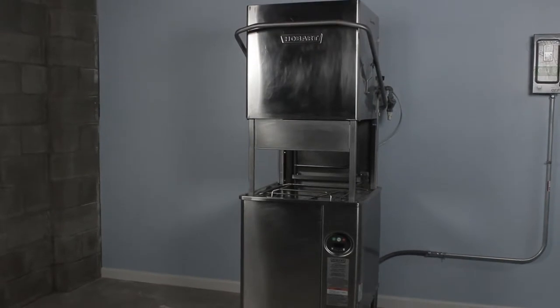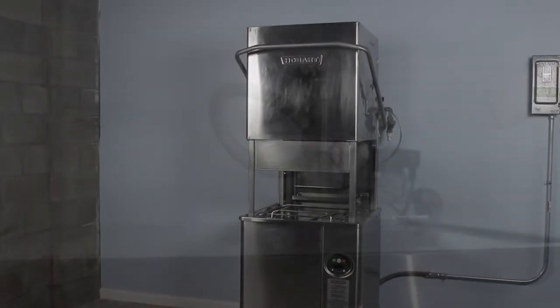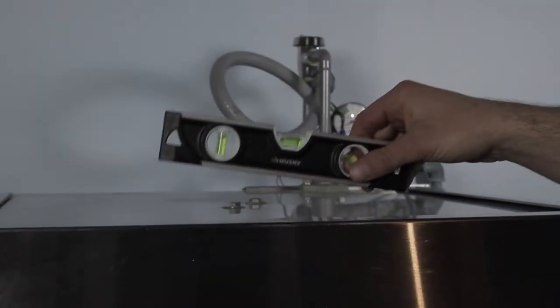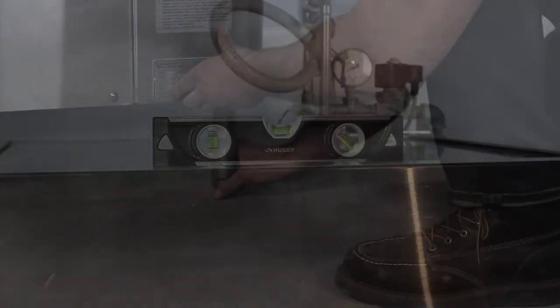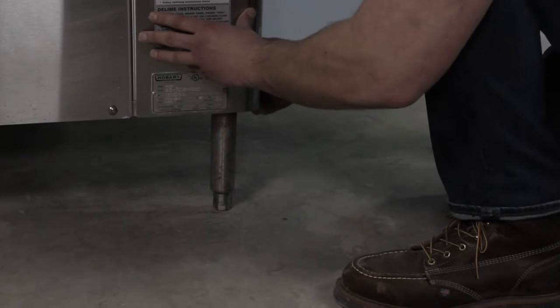To start out, you want to place the machine in the ideal location, and that's just determined by the layout of your restaurant. Once in place, go ahead and level the machine by adjusting the threaded legs to ensure the machine doesn't wobble. This could cause a lot of damage when you're running it.